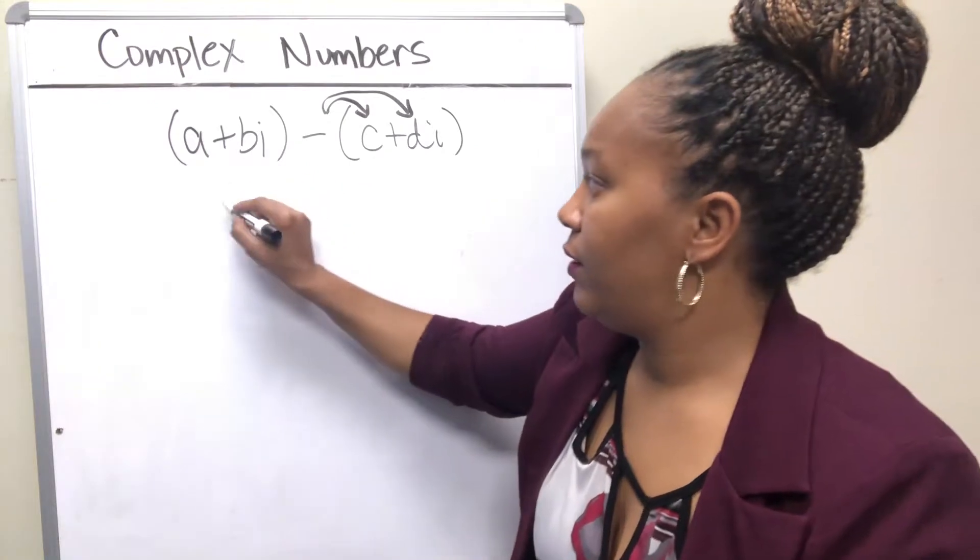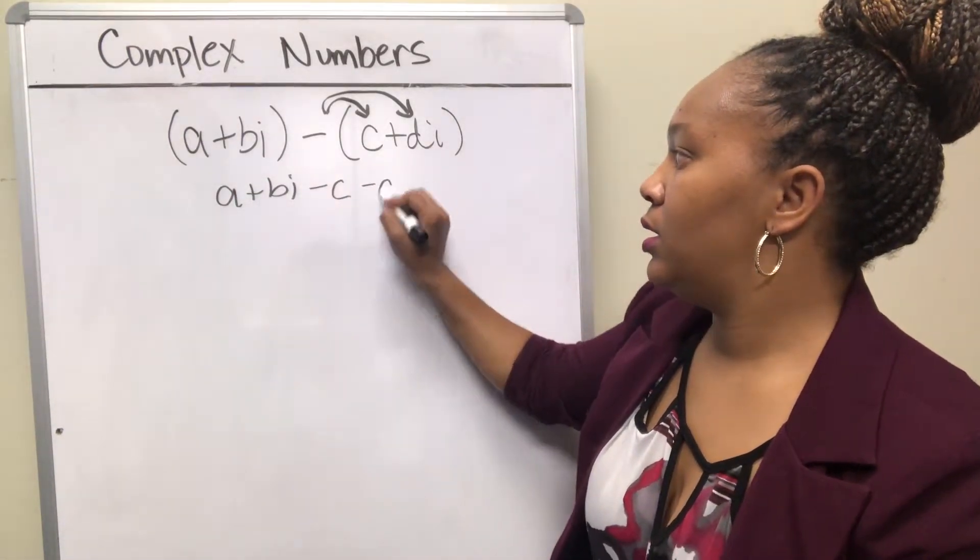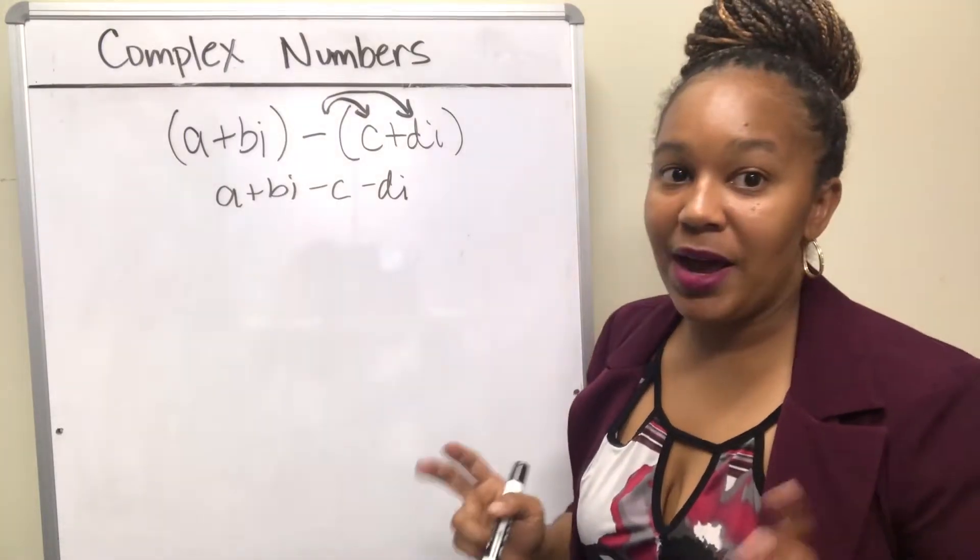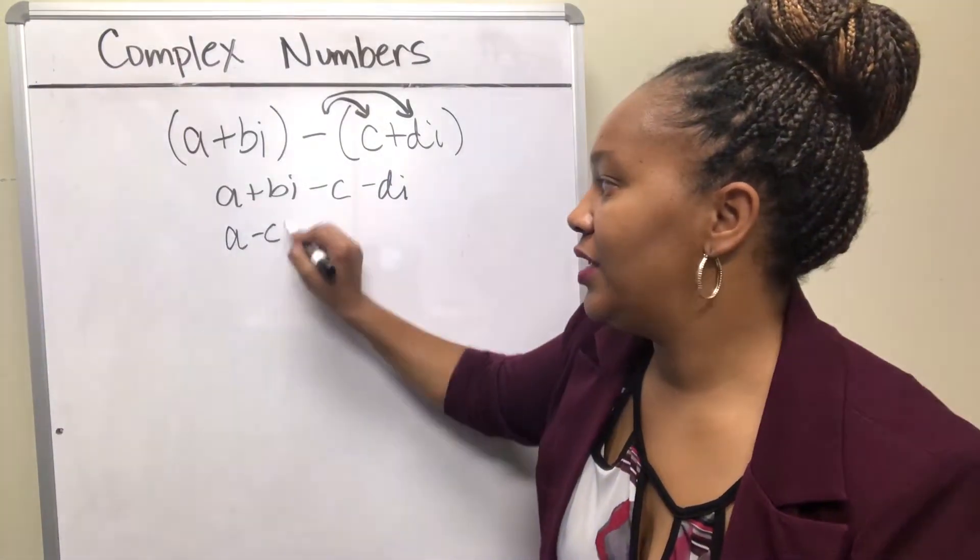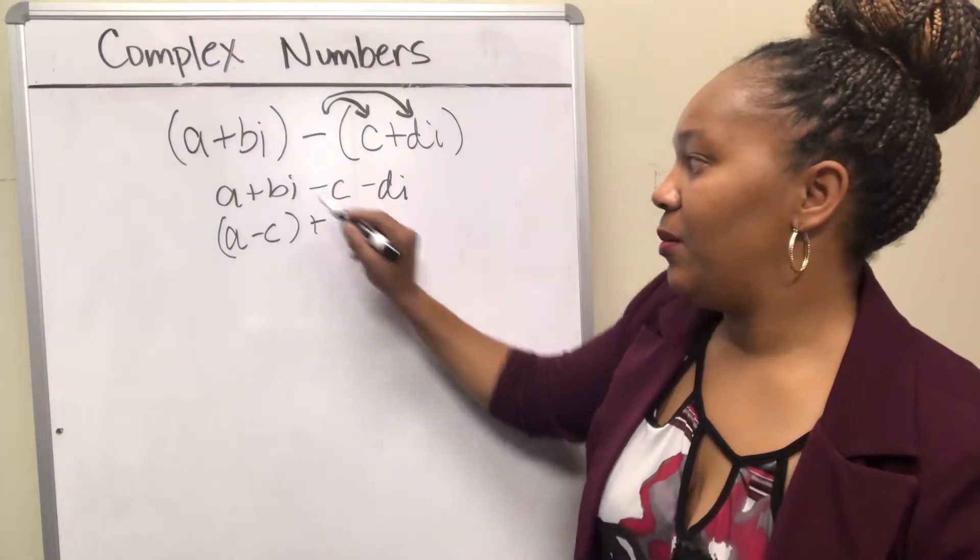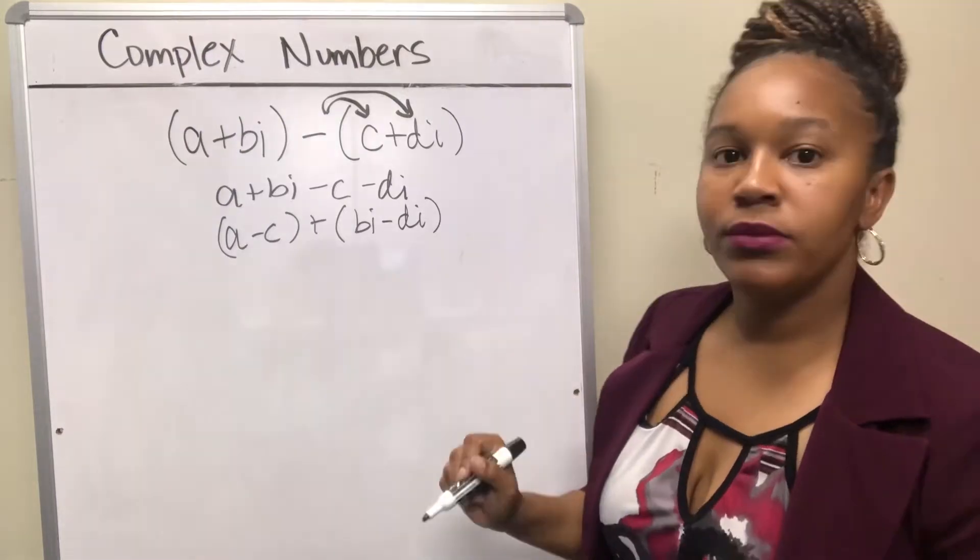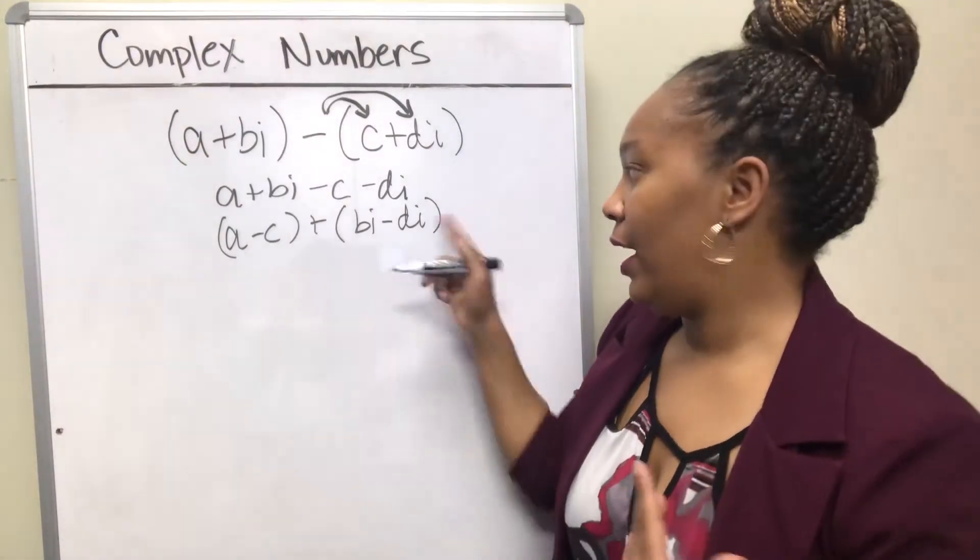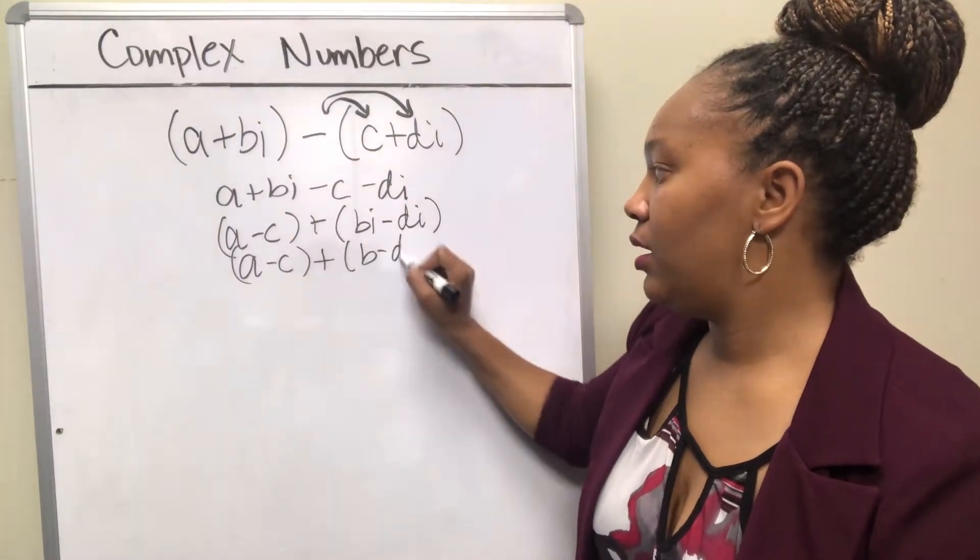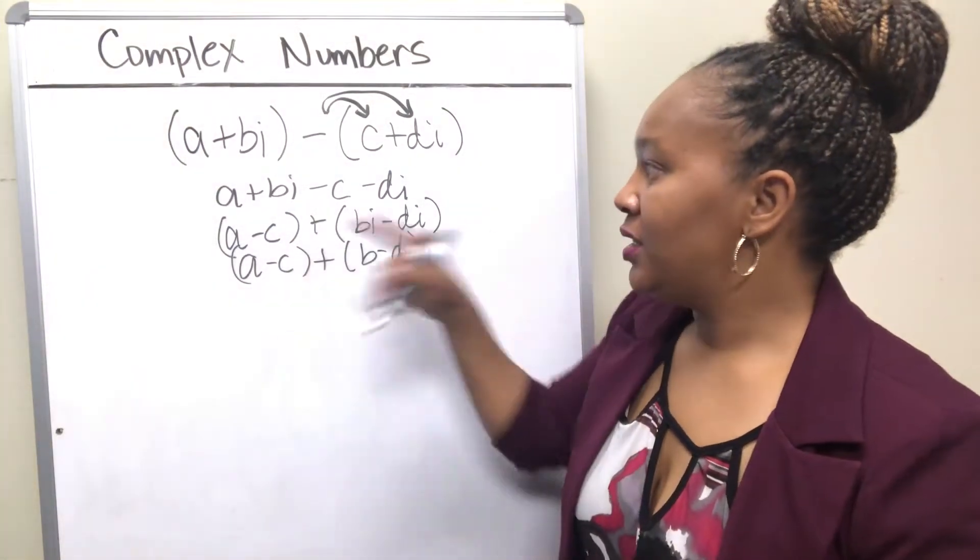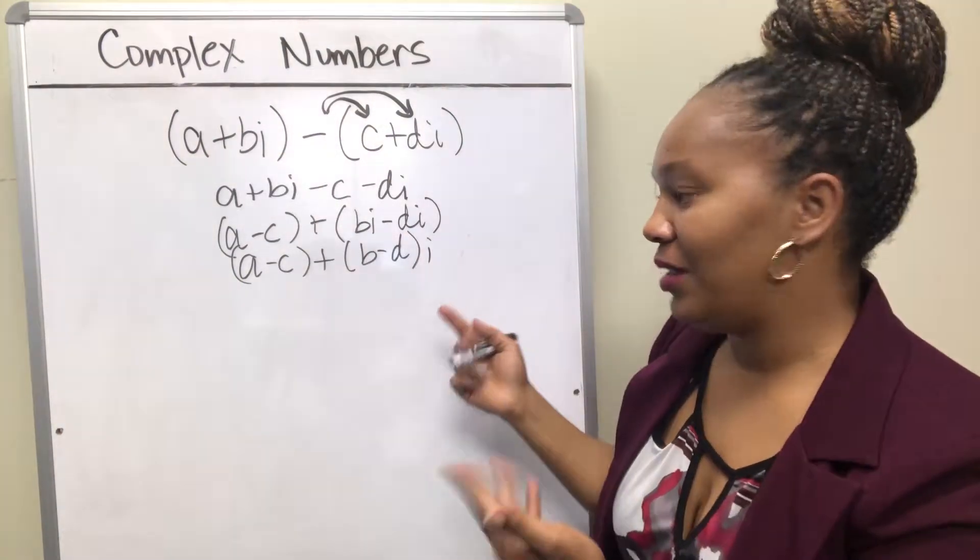So you can distribute this negative, drop the parentheses, and then essentially combine your like terms. Your like terms will be the real parts, so A minus C, and the imaginary parts, Bi minus Di. And again you can pull the i out on this last part, so A minus C plus (B minus D)i. That's the same as subtract the real parts, subtract the imaginary parts. You get the same thing in the end, so you can do it either way.